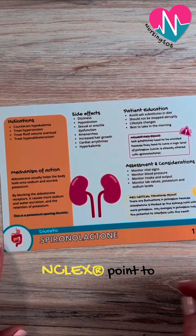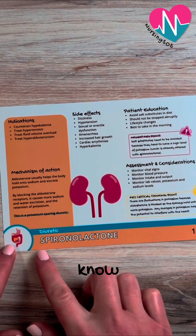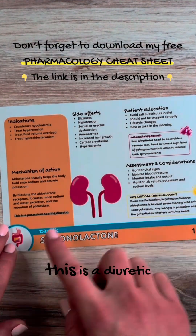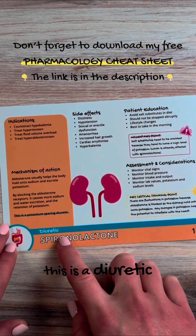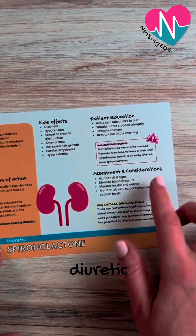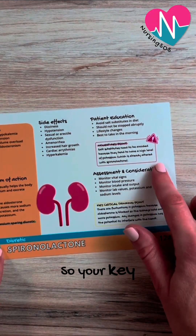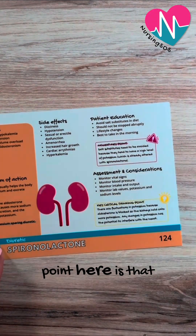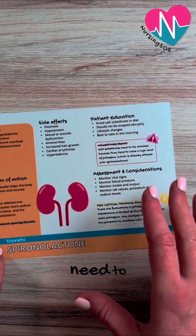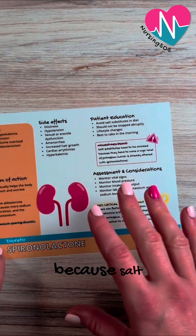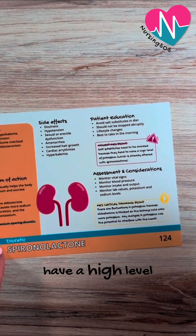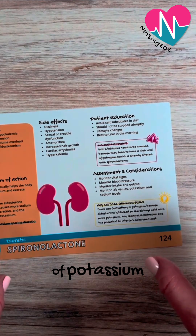Here is a key NCLEX point to know for spironolactone. This is a potassium-sparing diuretic. The key NCLEX point here is that salt substitutes need to be avoided, because salt substitutes typically have a high level of potassium.